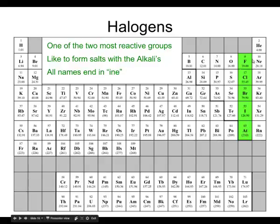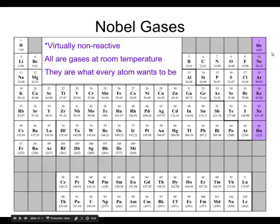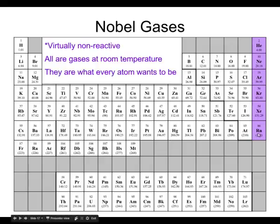On the far right-hand side of the periodic table, we have the noble gases. These noble gases are like royalty — that's why we call them noble, or the stars of the periodic table. Every other atom on the periodic table wants to look like one of these atoms on the outside, and that's why they're so special.